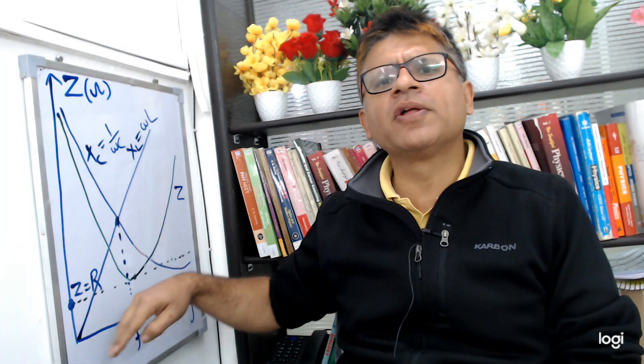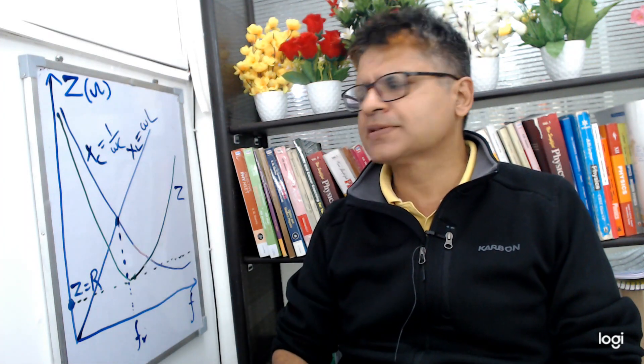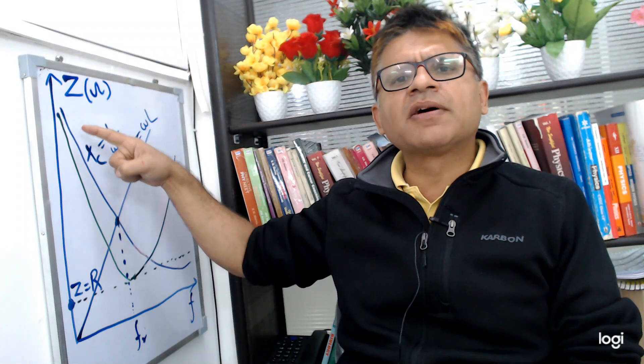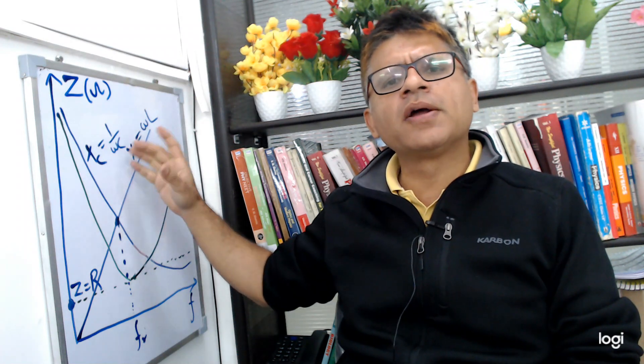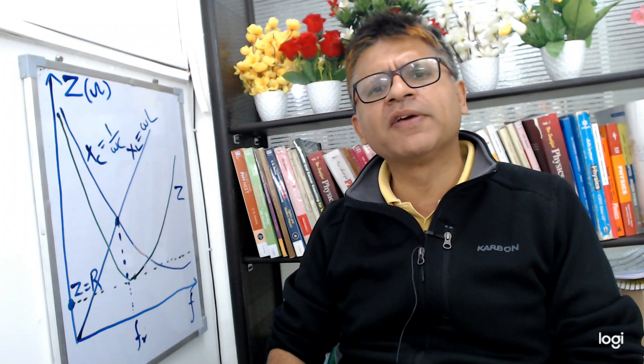The frequency is changing on the x-axis and impedance is changing on the y-axis. Impedance is the green part of the graph. The other two are the reactances offered by the capacitor and inductor, which is pretty well known.